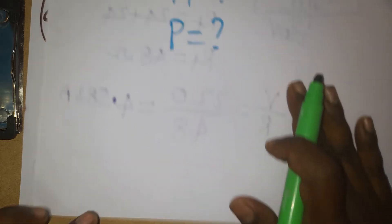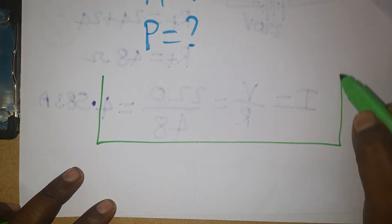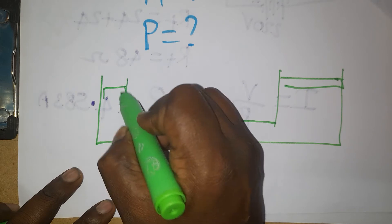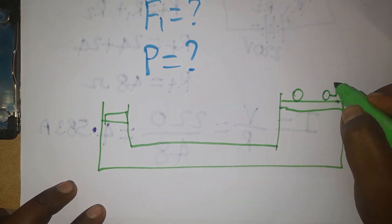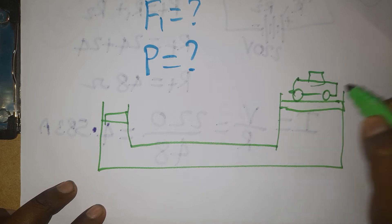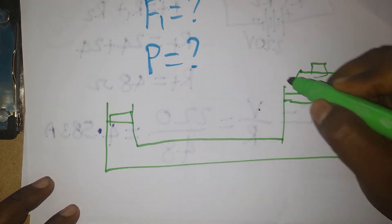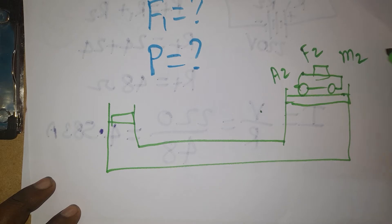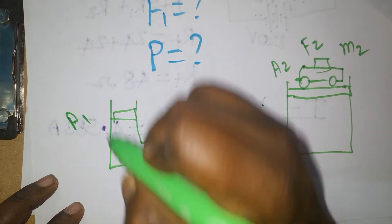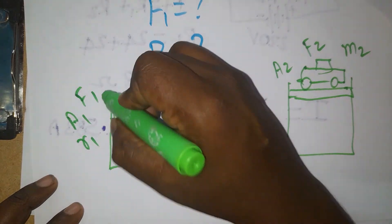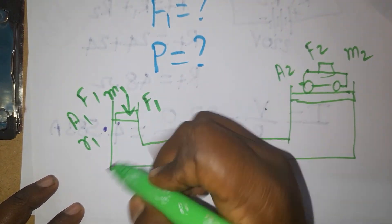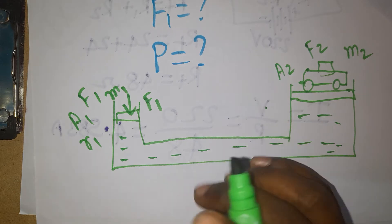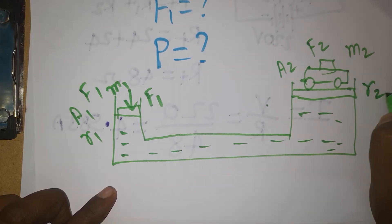In Pascal's law, total pressure is constant. On the bigger radius side we have the bigger mass — we can think of it as lifting a car. That side has Area 2, Force 2, and Mass 2. The other side has Area 1, Radius 1, Force 1, and Mass 1. Pressure is constant on both left and right sides.